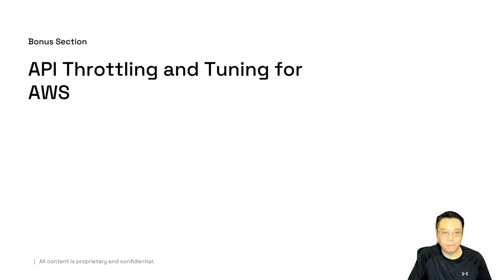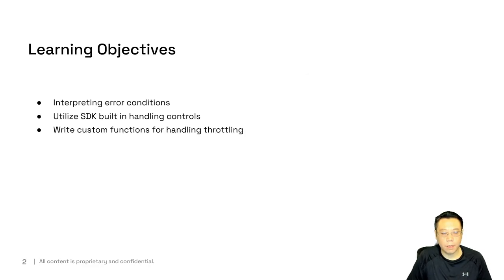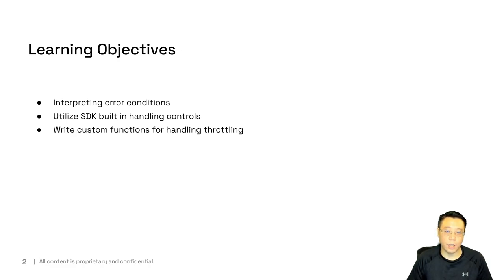Hi, welcome back. You're in the bonus section of API throttling and tuning for AWS. My name is Dennis. Let's go ahead and get started. Our learning objectives include interpreting error conditions and utilizing the SDK built-in handling controls, and writing custom functions to handle throttling and other conditions that you might see.